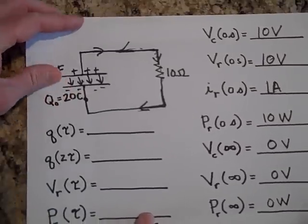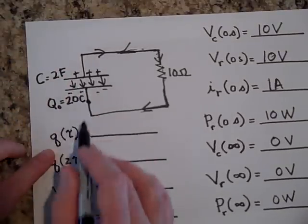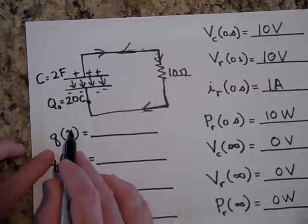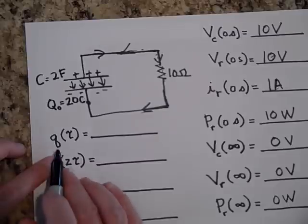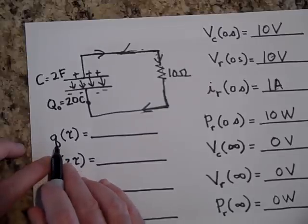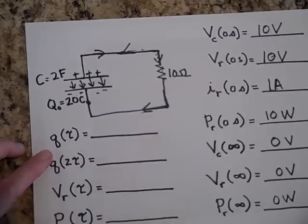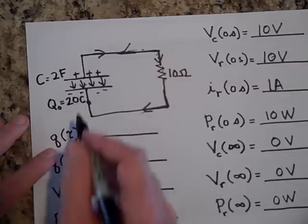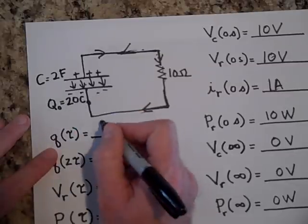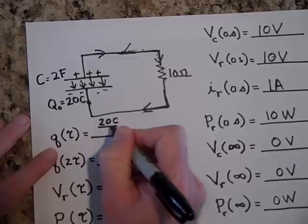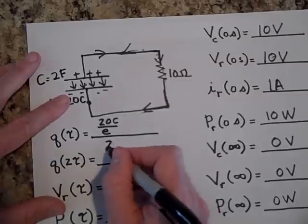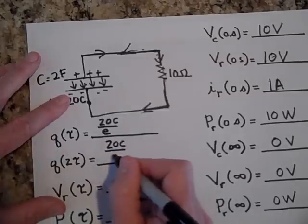For the graph, what is the charge on the capacitor after one time constant? The charge starts at 20 Coulombs and decays, so after one time constant it will be 20 Coulombs over e. After two time constants, it will be 20 Coulombs over e squared.